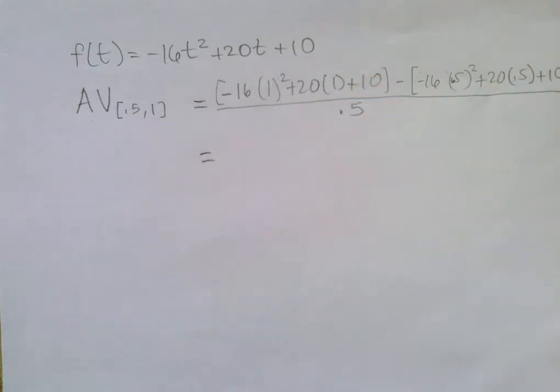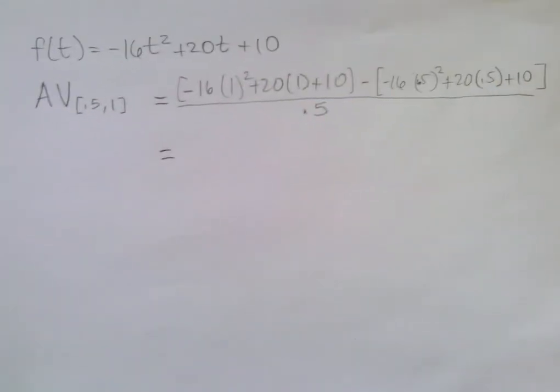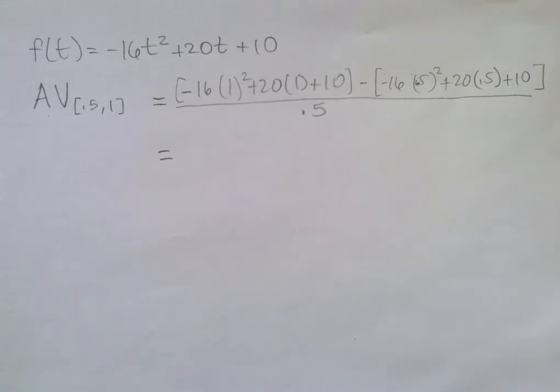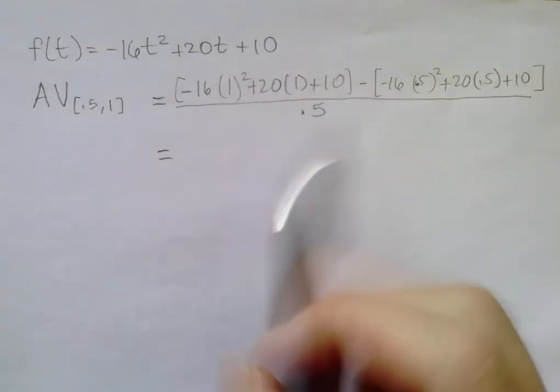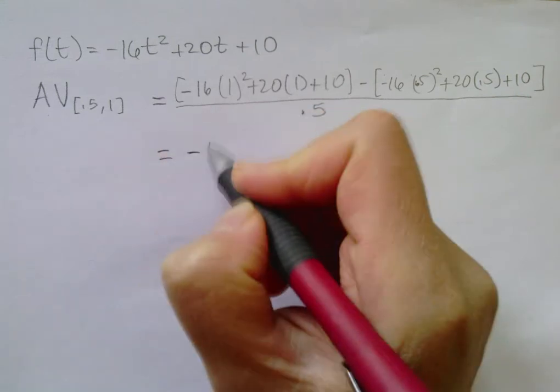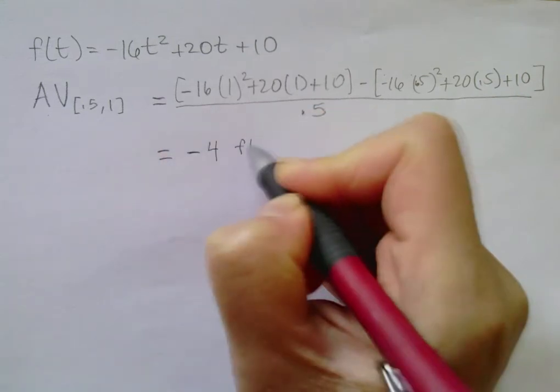So now I want you to pause the video and finish this computation. If you did this computation right, you should get negative 4. Again, that's feet per minute.